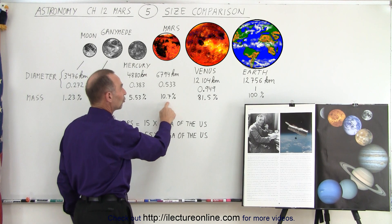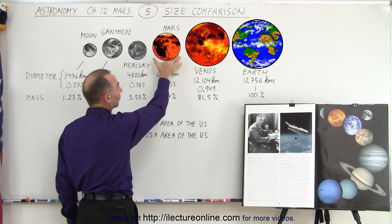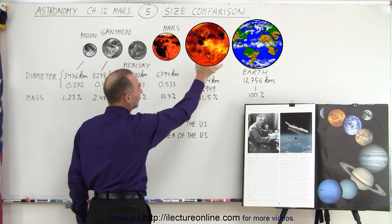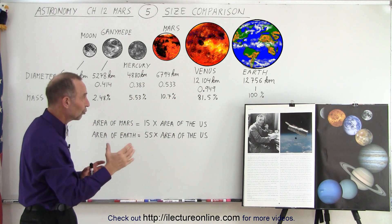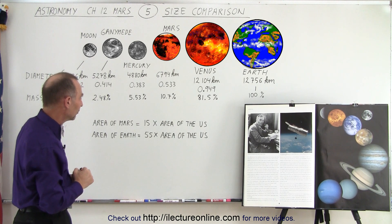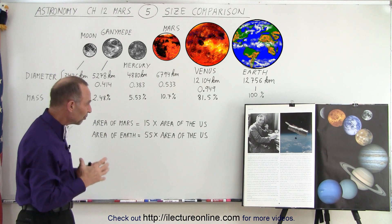And also the density of Mars is much smaller. So even though it only has about a little over half the diameter of Earth, it's only about 10% the mass because the density of Earth is quite a bit larger than the density of Mars.